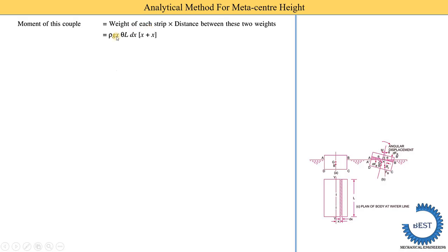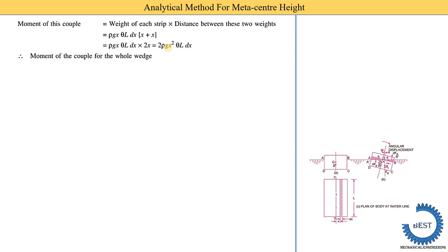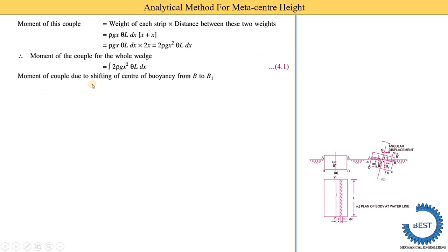The moment of the couple for one strip is 2·ρg·X²·θ·L·dX. This is for only one strip, but we need to find the moment for the whole wedge. For that, we integrate this equation. When we do the integration, we get equation number 4.1: the moment of couple due to shifting the center of buoyancy from B to B1 equals 2ρg·θ·∫x²·L·dx.